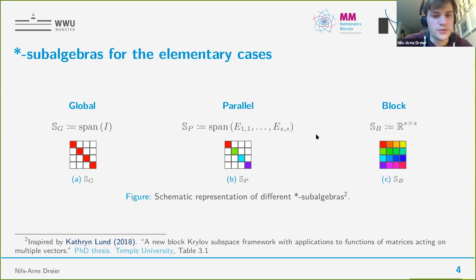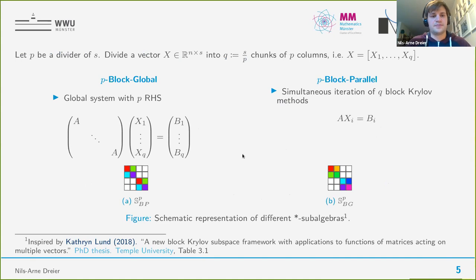One could ask whether we can find other star sub-algebras to invent new methods. That is the case. We can build new methods, and the most interesting are these two methods. They are constructed by subdividing a block vector into q chunks of p columns. So we can write x as x1 to xq, and every xi is a tall skinny matrix with p columns.